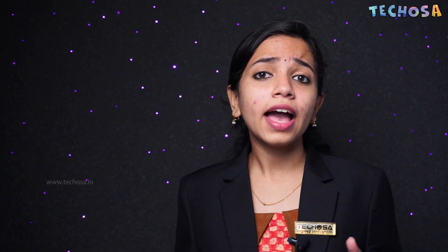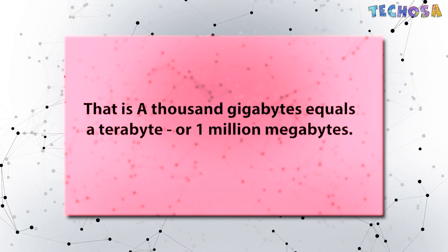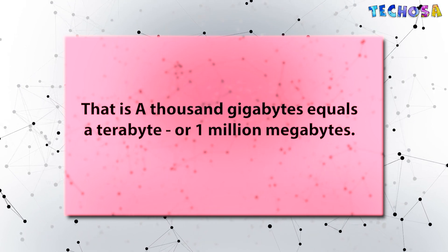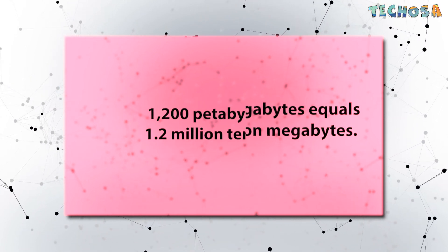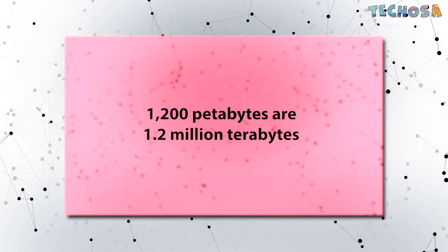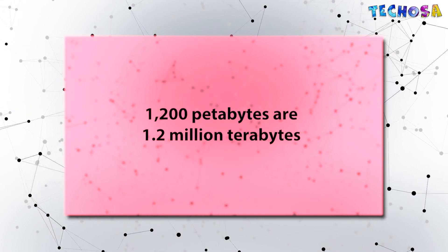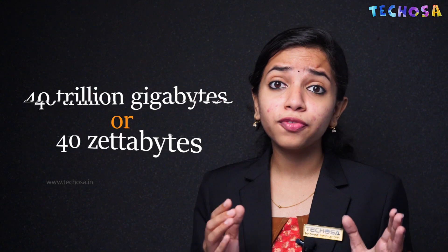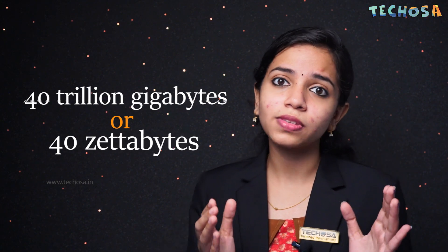In fact, about 500 hours of videos are uploaded to YouTube every single minute. After 2019, Science Focus estimated that Google, Microsoft, Amazon, and Facebook collectively store at least 1,200 petabytes. Do you know how much a petabyte is? A thousand gigabytes equals a terabyte, or one million megabytes. So 1,200 petabytes equals 1.2 million terabytes, and it is estimated there will be 40 trillion gigabytes of data in 2020.